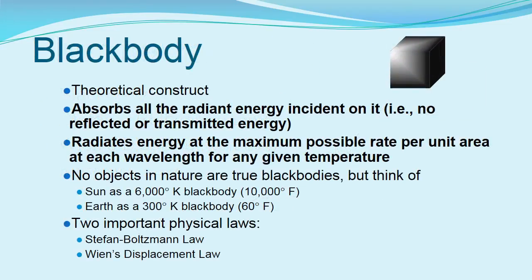A blackbody is a theoretical concept of a material that absorbs all the radiation that falls on it and in turn radiates energy at the maximum rate possible. It can be described as the perfect emitter. No real objects are true blackbodies. However, we can consider the sun as a blackbody that emits energy at 6,000 degrees Kelvin, or about 10,000 degrees Fahrenheit, and the earth as a blackbody that emits at 300 degrees Kelvin, or about 60 degrees Fahrenheit.